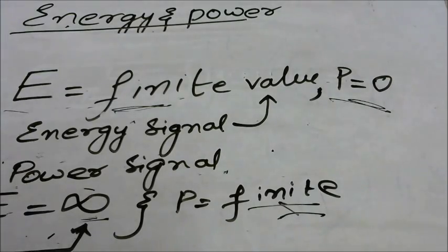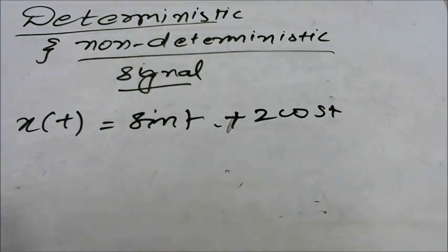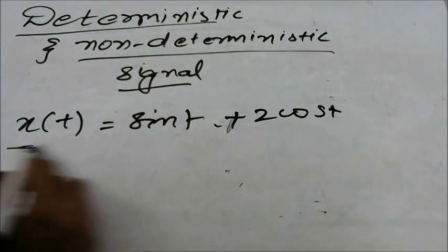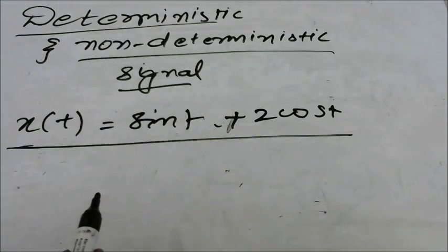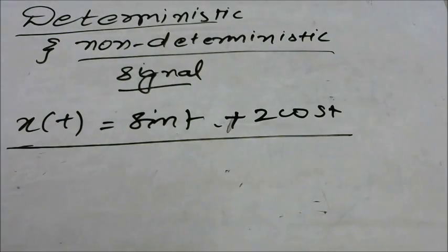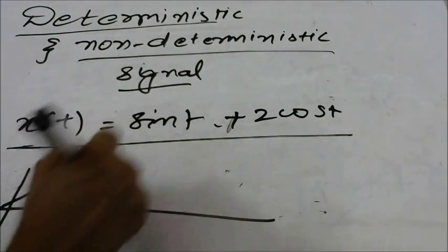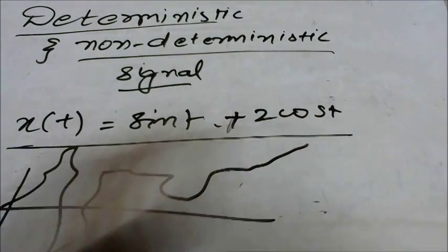Let us discuss deterministic and non-deterministic signals. If we are able to represent a signal in mathematical form, then it is called a deterministic signal. Otherwise, it is called a non-deterministic signal or random signal.